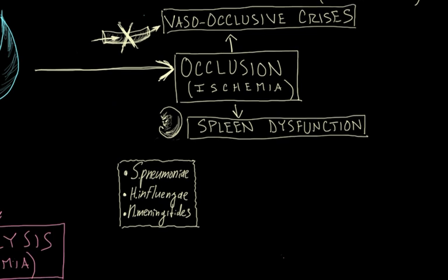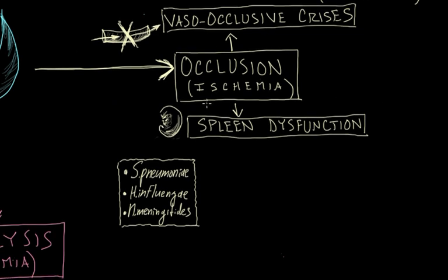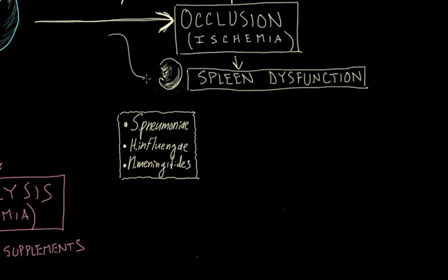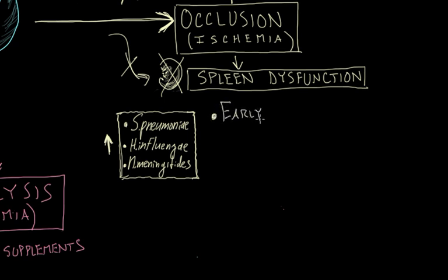The other aspect of this disease process is splenic dysfunction. If we're occluding the circulation to the spleen, the spleen becomes infarcted. The spleen is instrumental in fighting off encapsulated bacteria, so if the spleen is dysfunctional, the patient has an increased susceptibility to infection by these bacteria. Therefore, they require early vaccinations against these bacteria.